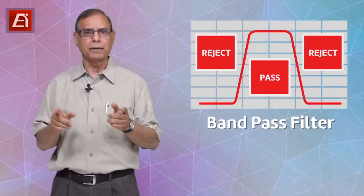Our last filter type, the band stop or notch filter, has a very different objective: to reduce or eliminate signals at a specific frequency band that are causing interference.